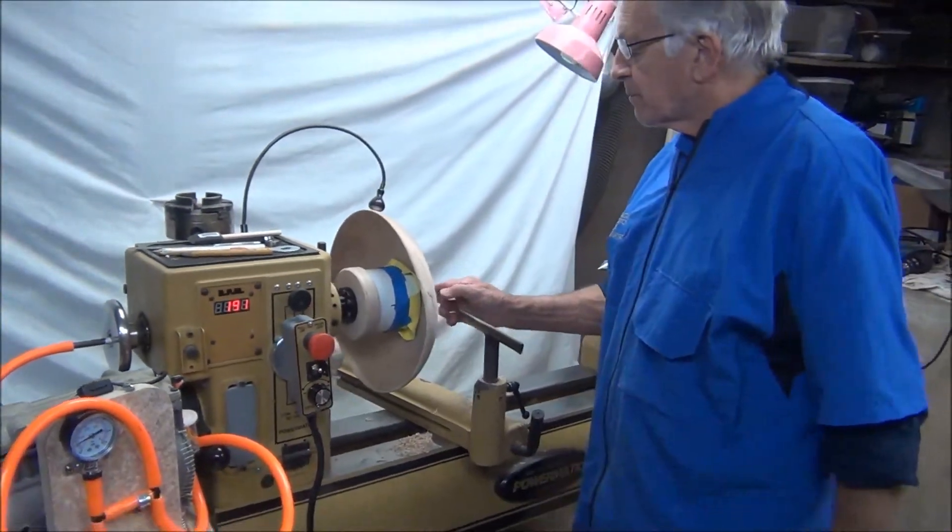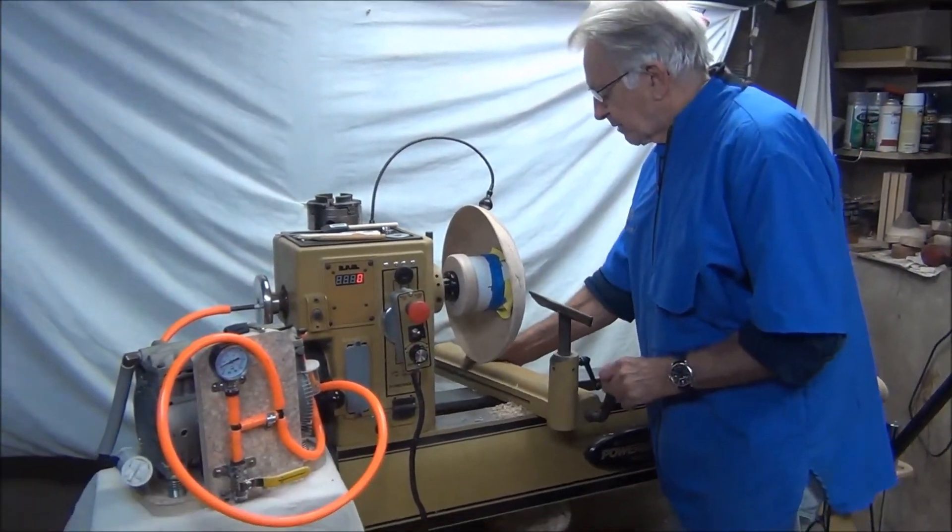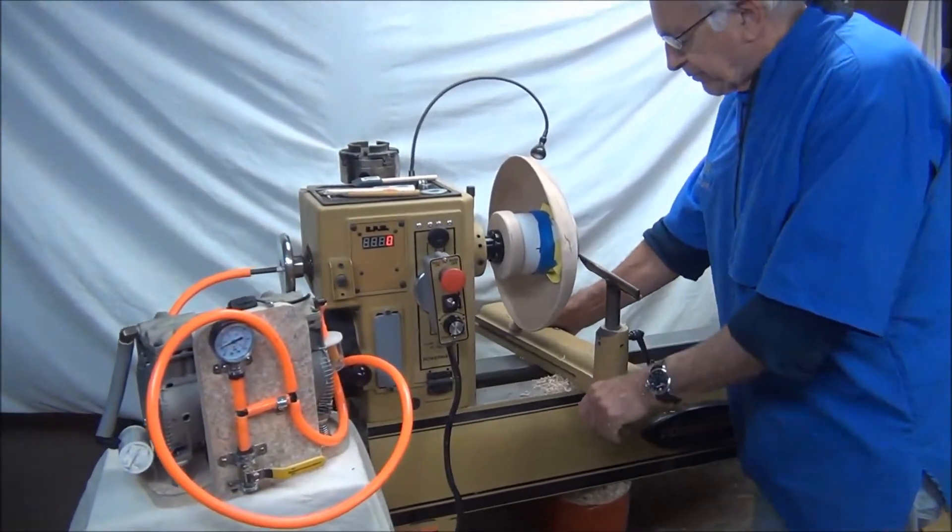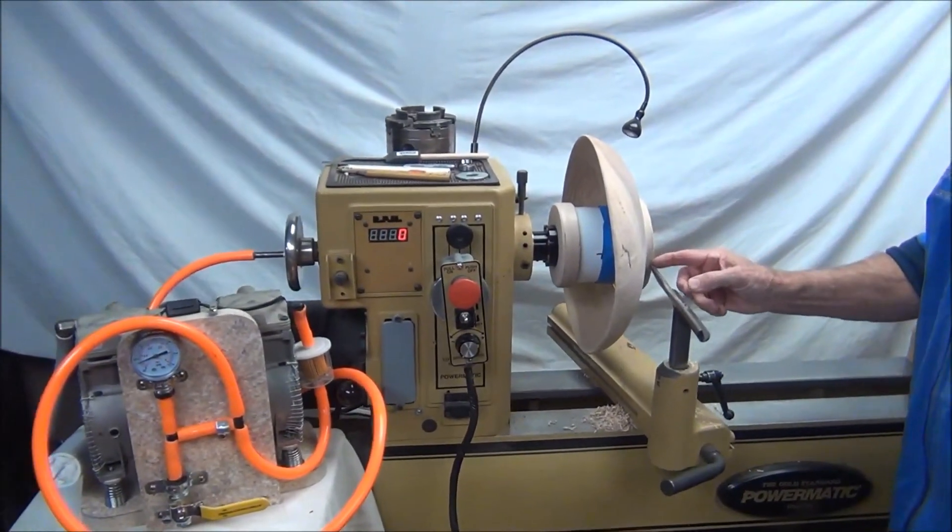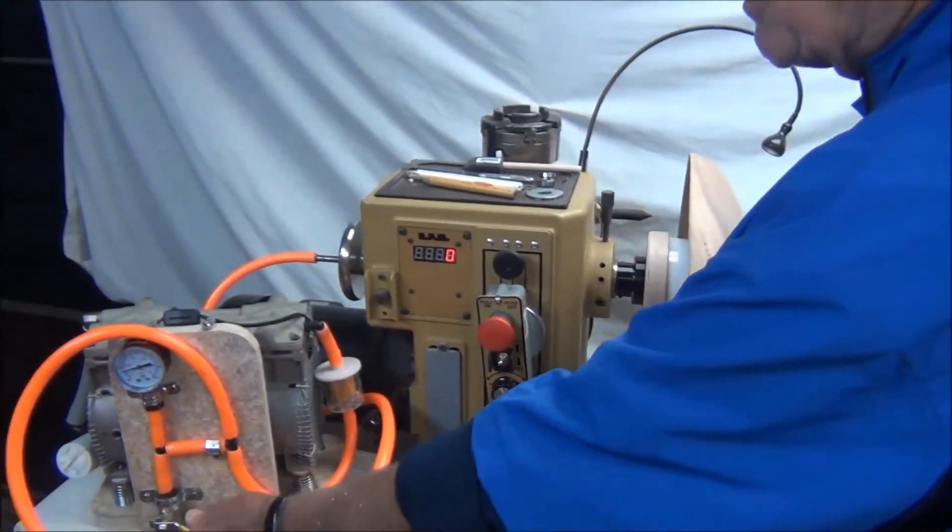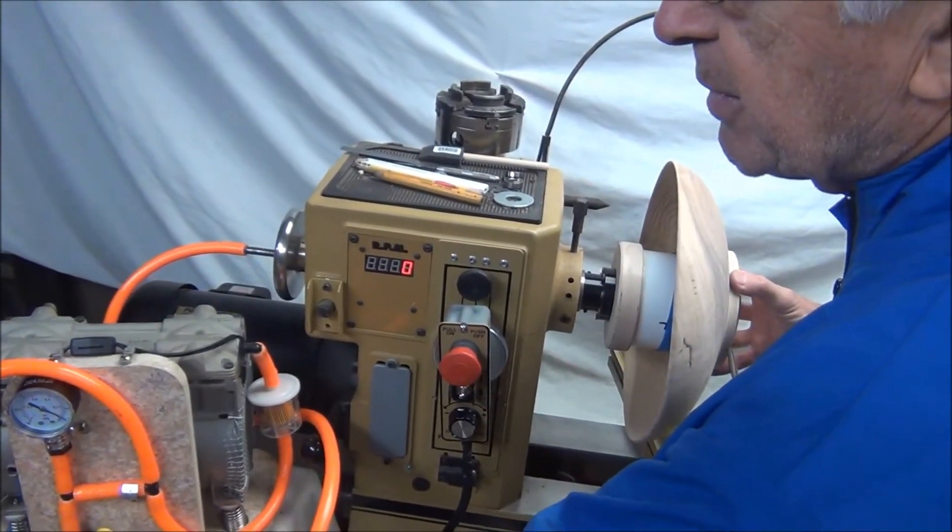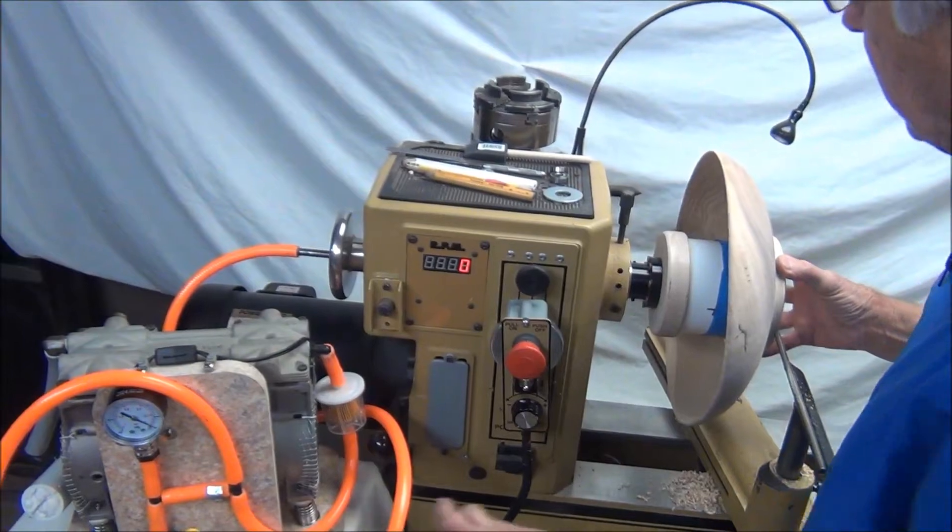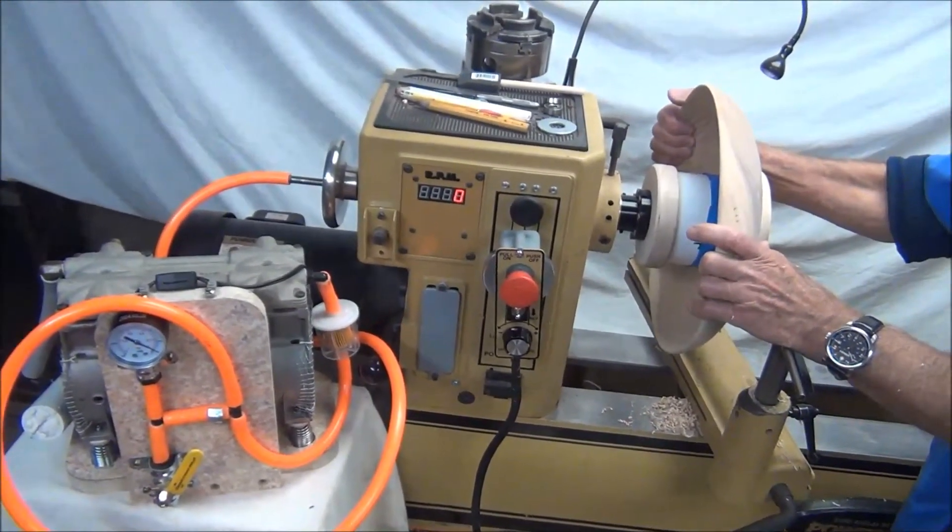If we didn't have a registration point like I originally tried to center this with, if we use our tool rest as a registration point, we can bleed off vacuum. When I bleed off vacuum, we don't have as much momentum on here. We just have a tender grip on here.